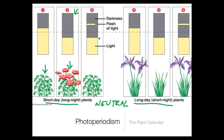This is really interesting: even if you have the correct length of darkness but you interrupt that darkness with a flash of light, the flowers get confused and will not flower. So in order for these plants to respond, they need a very consistent length of darkness. This is one of the ways plants respond to seasonal changes — unless you're at the equator, your days and nights become longer or shorter based on the season, and that lengthening or shortening of nighttime controls the flowering response.